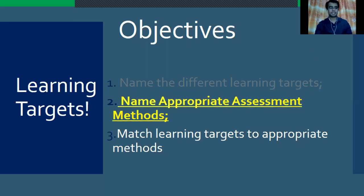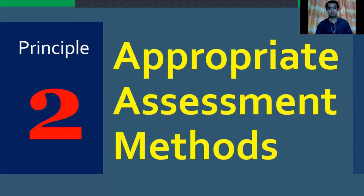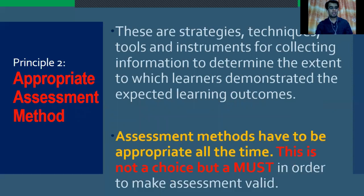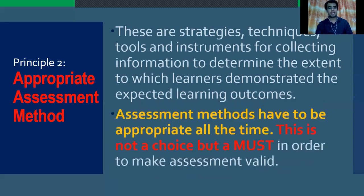Now let us focus on the second objective: to name the appropriate assessment methods. Principle number 2 — appropriate assessment methods — are strategies, techniques, tools, and instruments for collecting information to determine the extent to which learners demonstrate the expected learning outcomes. Assessment methods have to be appropriate all the time. This is not a choice, but a must, in order to make assessment valid.